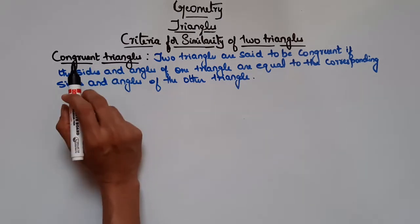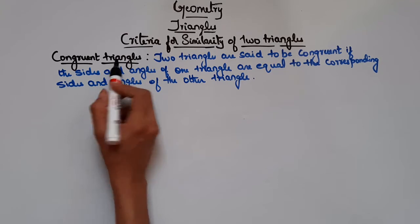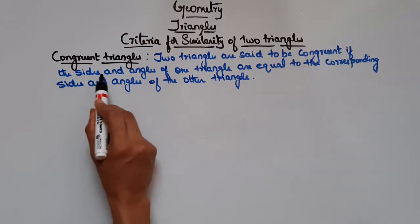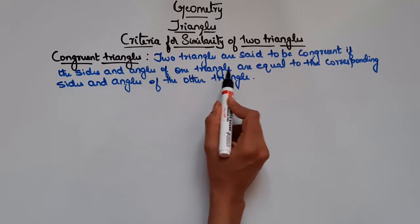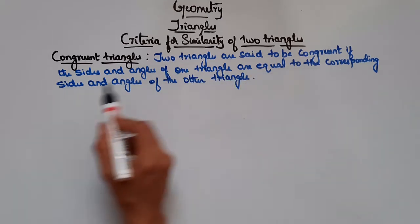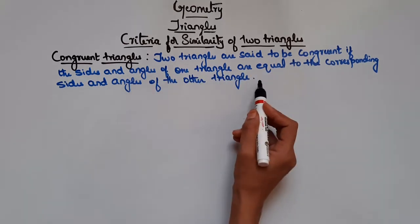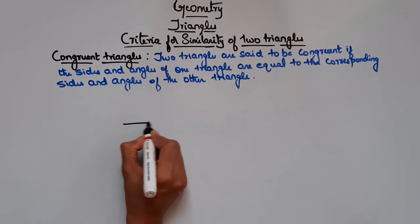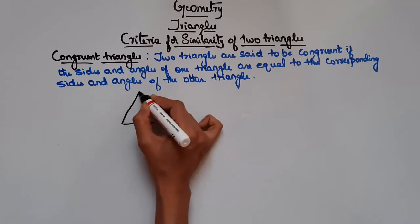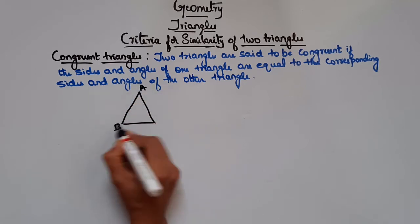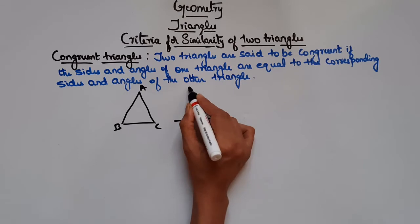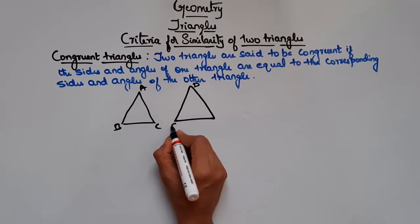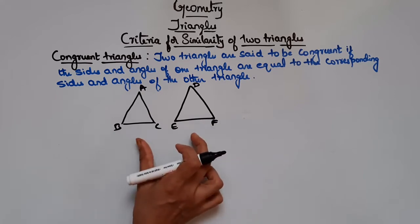Before seeing similar triangles, first let's see what congruent triangles are. Two triangles are said to be congruent if the sides and the angles of one triangle are equal to the corresponding sides and angles of the other triangle. Let's consider two triangles — say we have triangle ABC and triangle DEF.